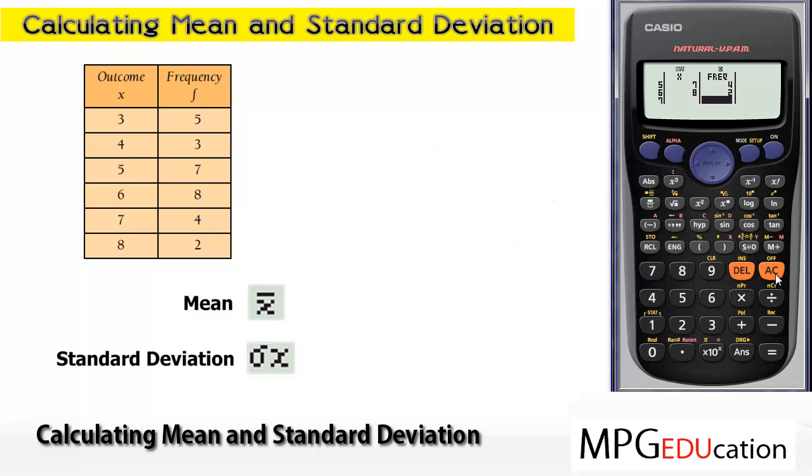And now we follow that same process as before. Press the AC button. All the data is now in the calculator. And go through Shift, 1, 4, 2, and equals, which will give us an average. And you can see there, we have an average of 5.3.